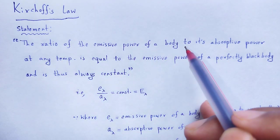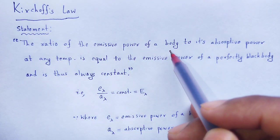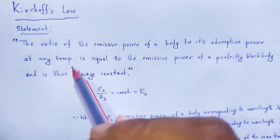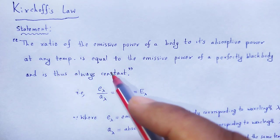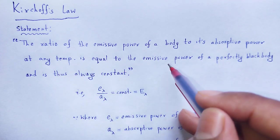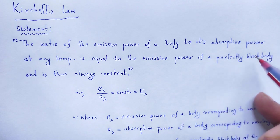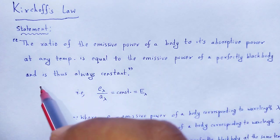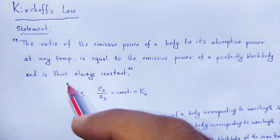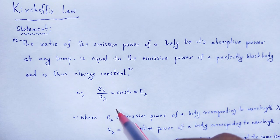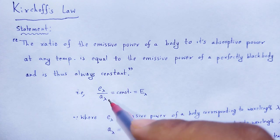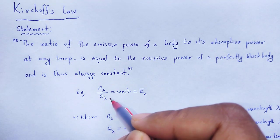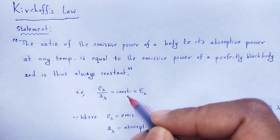The ratio of the emissive power of a body to its absorptive power at any temperature is equal to the emissive power of a perfectly black body, and is thus always a constant. Mathematically, E_lambda divided by A_lambda is equal to a constant.